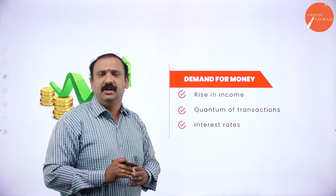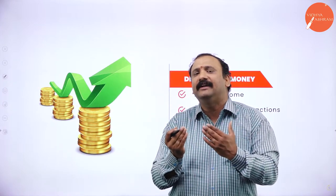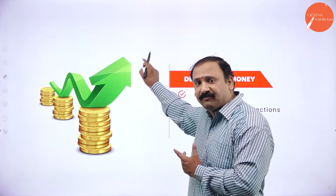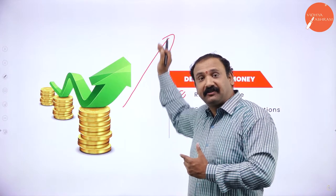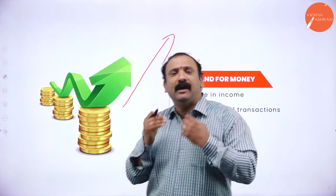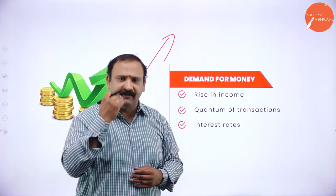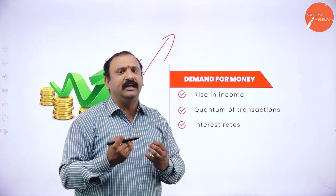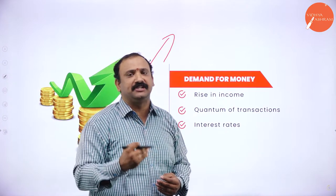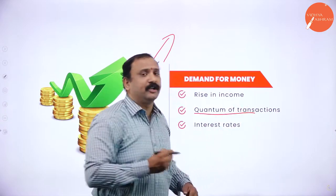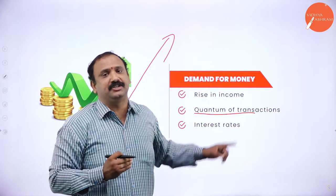The second factor is the quantum of transaction. When I have only 10,000 rupees, my transactions are quite limited. But if my income suddenly becomes 1 lakh rupees — as the graph goes up in a trajectory manner — my transactional value also starts going up. I will buy more, spend more, and make more purchases and transactions. The number and value of transactions will increase alongside income.